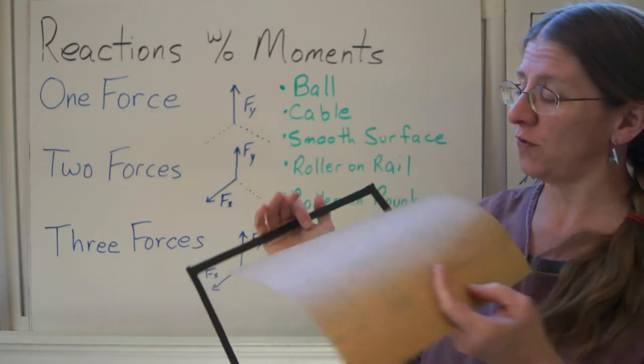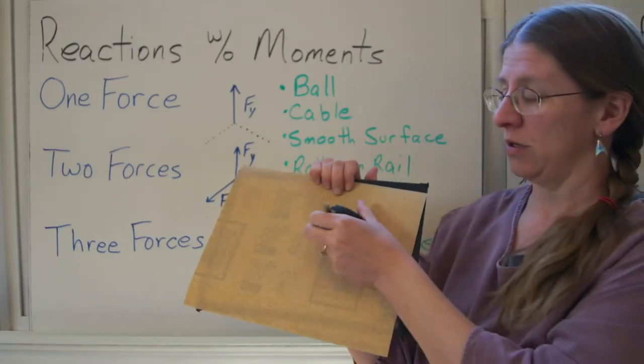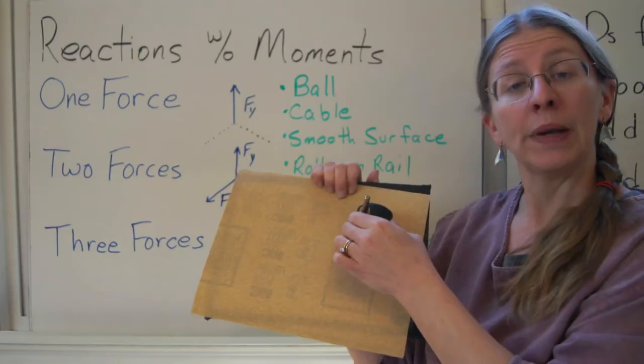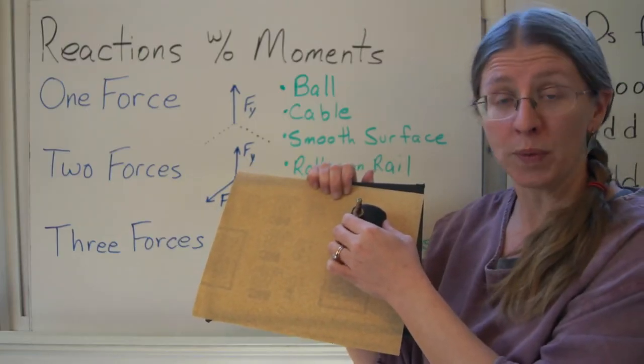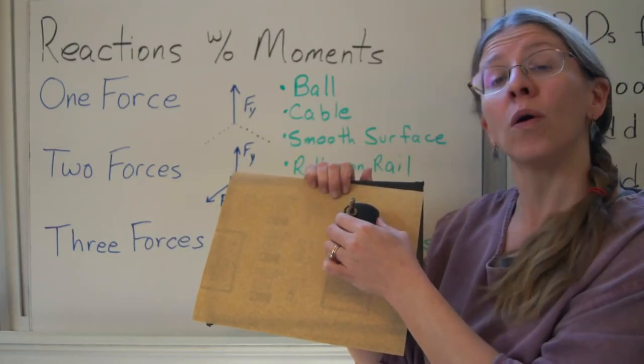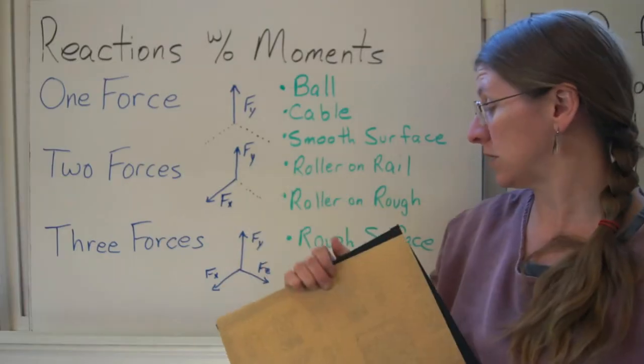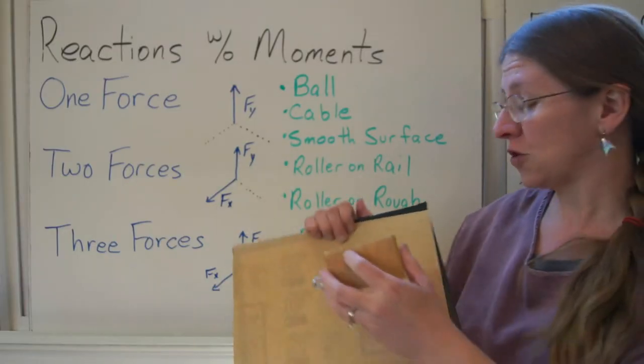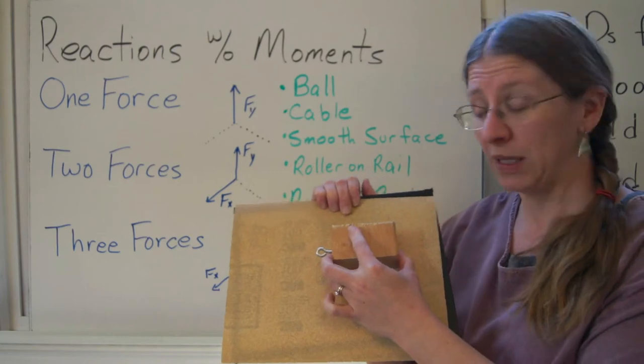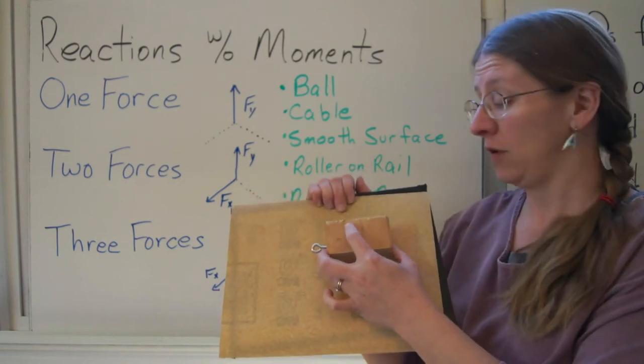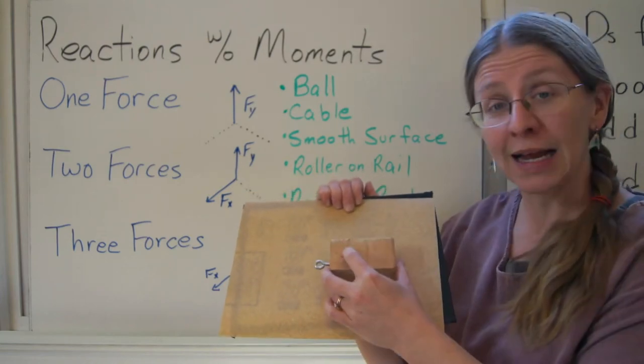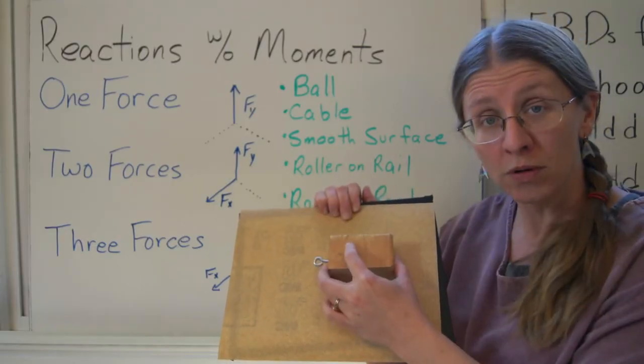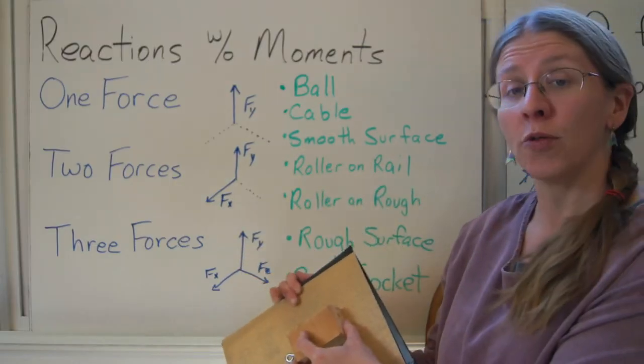A roller on a rough surface is the same situation. It can roll, but it can't go down perpendicular to its rolling path or through the surface. So I get two forces there. When I talk about a rough surface, now I have three because this isn't going to roll. I have no opportunity for this to slide down, right, or through. A rough surface will give me all three forces.